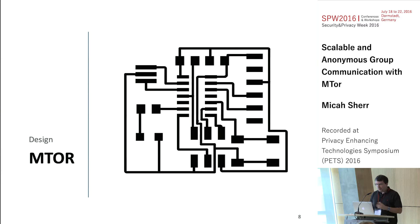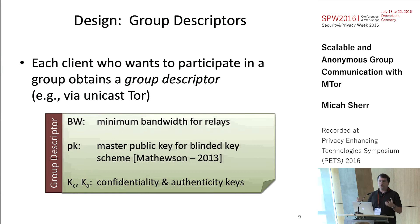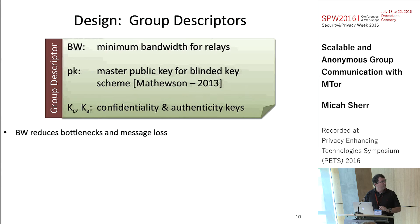The design of mTOR begins with receiving a group descriptor. If I want to join a group, I somehow get one of these descriptor documents — posted on a blog, fetched over unicast Tor. It describes the multicast group, one per group. It specifies a minimum bandwidth required because with multicast, loss becomes a factor, and we want to remove bottlenecks.